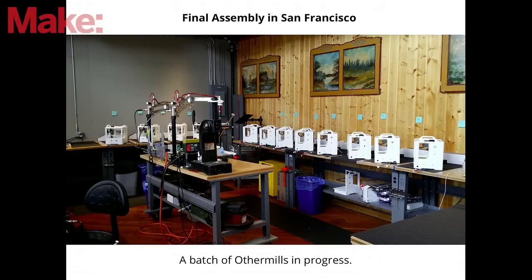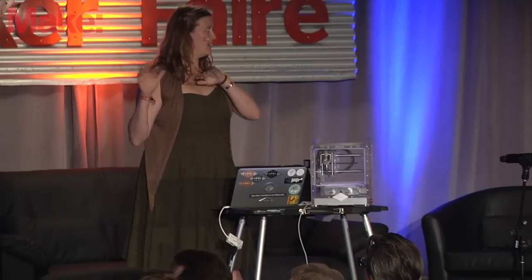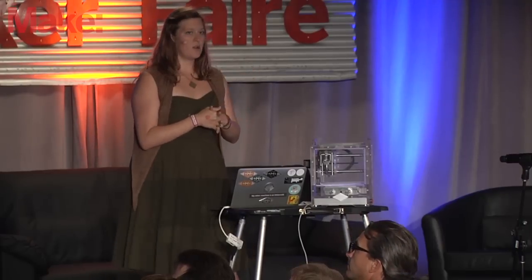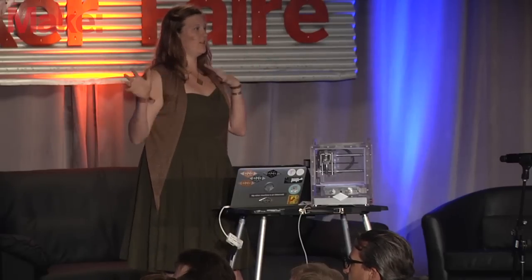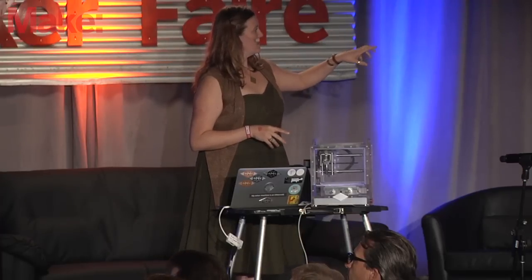This is where we build the machines — this is final assembly. This is an old pipe organ factory in San Francisco in the Mission. We do batches of machines there — a batch of Other Mills in progress. We've taken an old pipe organ factory, specifically designed to build pipe organs, and retrofitted it to build these desktop machines. We also do sub-assembly and incoming quality control. The quality control part is a theme you'll hear throughout.